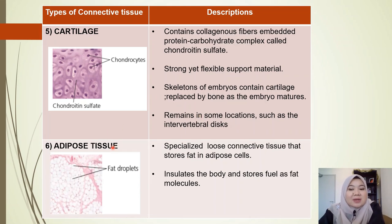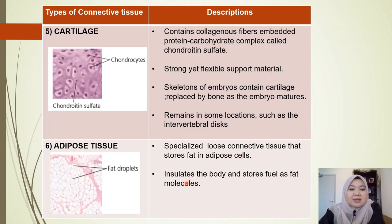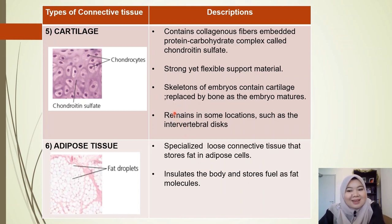The last connective tissue is adipose tissue — specialized loose connective tissue that stores fat in adipose cells. Its function is to insulate the body and store fuel as fat molecules. That's all for the second category of animal tissue.